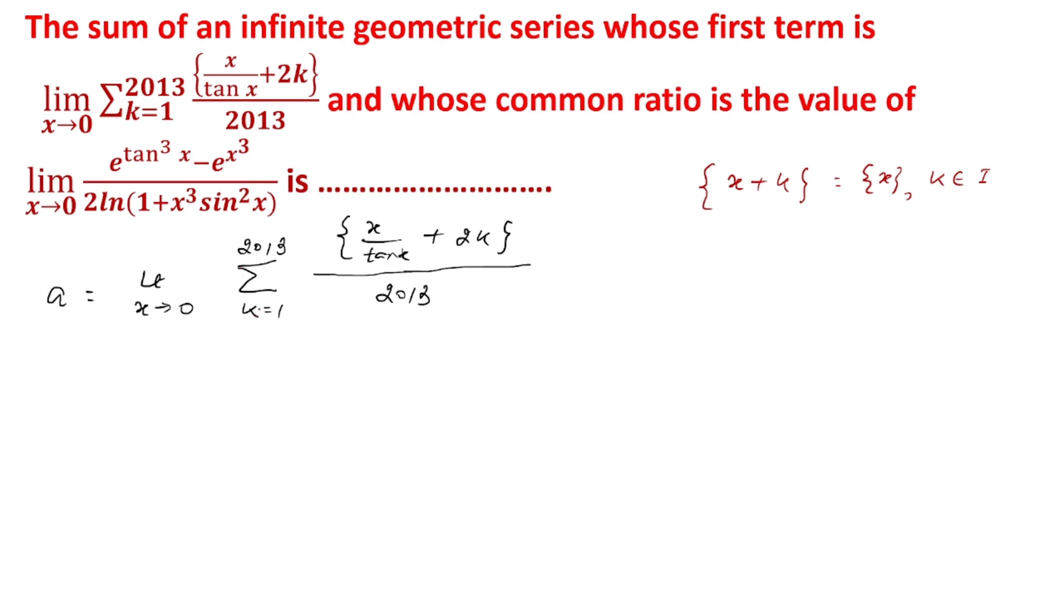If we run sigma from lower to upper limit, 1, 2, 3 up to 2013, we get pure integers. So we're adding this 2013 times. This gives us limit x tends to 0, and the summation simplifies to give 2013.